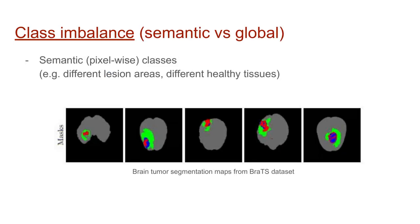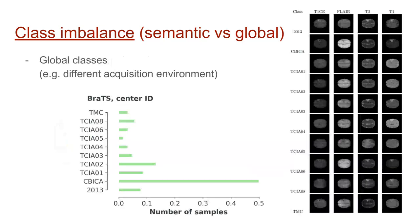When one talks about the class imbalance problem, we normally imply the imbalance over semantic classes — for example, different lesion or healthy tissue areas. However, it can be that in a dataset there is also an imbalance over global classes. For example, in the breast dataset, there are MRI scans obtained from various image acquisition environments that can differ in terms of contrast.